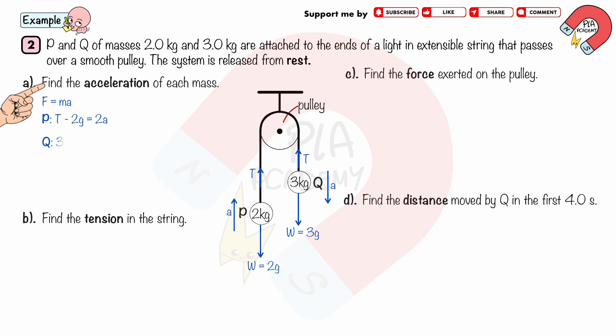Adding the two equations together gives g = 5a. Substituting g = 9.81, we get acceleration a = 2.0 m/s² (2 significant figures).